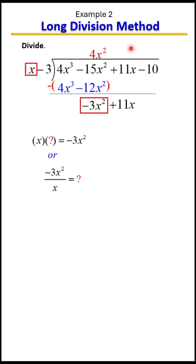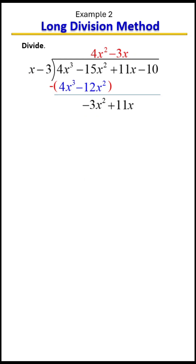We're going to place negative 3x above the x position. Now we multiply that term by both terms on the outside, starting with the outermost: negative 3x times x equals negative 3x squared, and negative 3x times negative 3 equals positive 9x. Then we subtract.